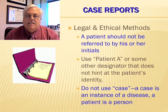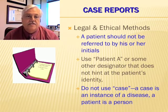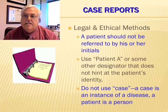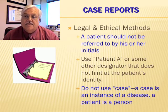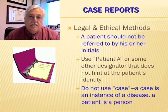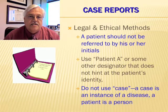A little bit about writing a case report using legal and ethical methods. A patient should not be referred to by his or her name or initials in the paper. You should use 'Patient A' or some other designator that does not hint at the patient's identity. A case is an instance of a disease, and a patient is a person — some suggest using common names, though that doesn't work very well.